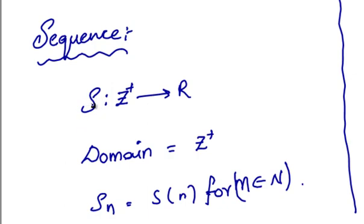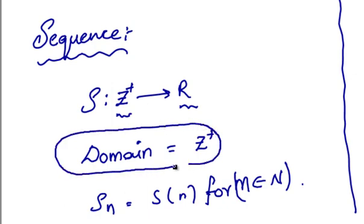Definition: A function S mapping from Z plus to real numbers, i.e. positive integers to the real numbers, is called a Sequence of Real Numbers. Since the domain of each Sequence is Z plus, the Sequence is said to be the Sequence of Real Numbers.